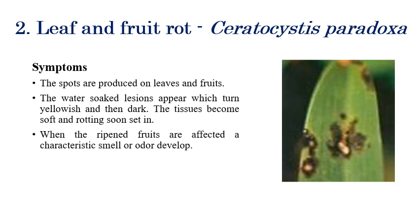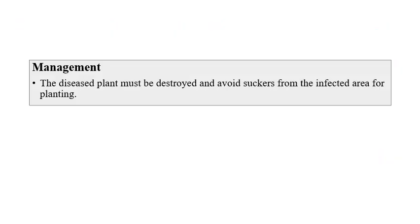The second disease is leaf and fruit rot, caused by Ceratocystis paradoxa. Symptoms can be seen in both leaves and fruits. Initially, water-soaked lesions appear on the leaves, which later turn yellowish. The infected tissues become soft and rotting is observed. The fruits also produce a characteristic smell due to this infection, and rotting of fruit flesh occurs.